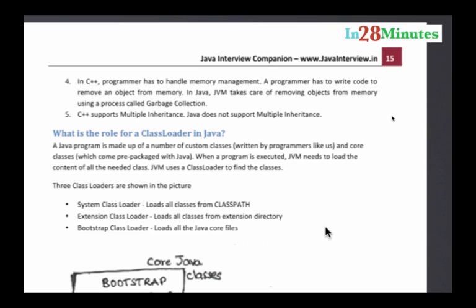The programmer has to just focus on creating the object. JVM takes care of giving it memory and once the object is out of the code, it makes sure that it's garbage collected as well. So that's another reason why programming with Java is much easier.